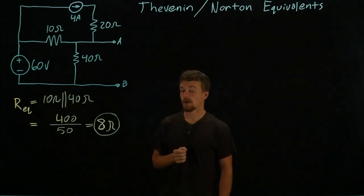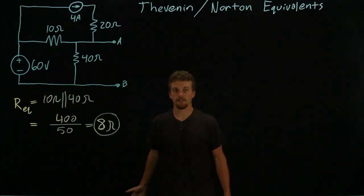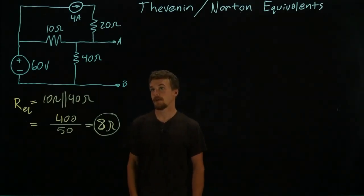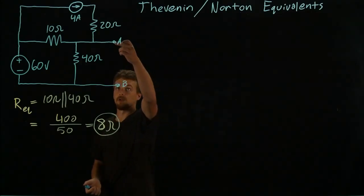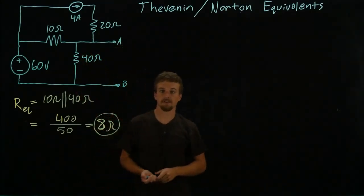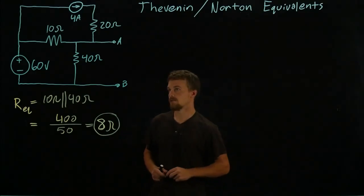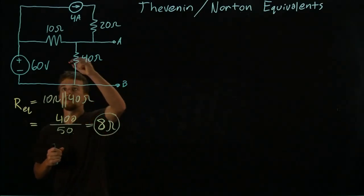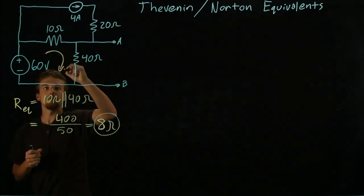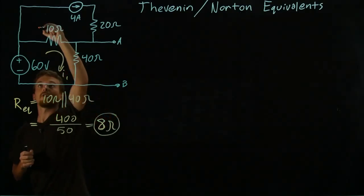So we're going to do some kind of analysis we know how to do, let's say mesh analysis, and we're going to find the voltage between A and B as the circuit sits right now. So let's set up a couple loop currents. We see two loops, call this I_1, call this I_2.